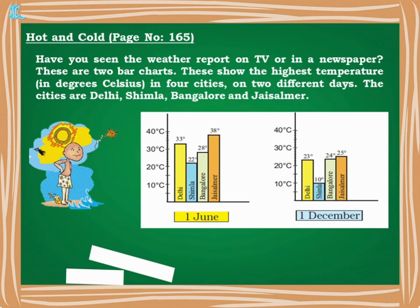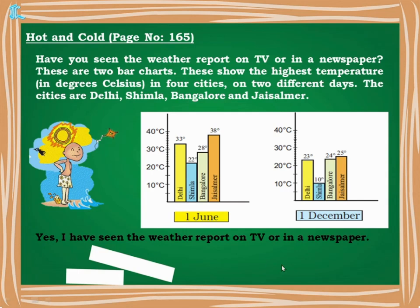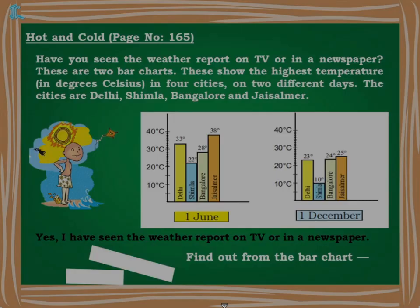Two reports are given: one is on 1st June and one is on 1st December, and the temperatures recorded in four different places are shown here. For the first question — have you seen the weather report — you write: yes, I have seen the weather report on TV or in a newspaper. Now find out from the bar chart; a few questions are given.